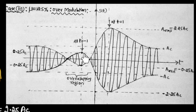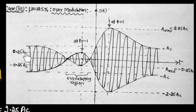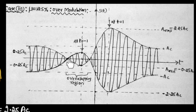We can write the lower envelope as well. At maximum, the lower envelope is −2.25Ac, and at minimum, it is 0.25Ac. As you can see, this section is known as the overlapping region, because the amplitude has crossed from positive into negative value. This type of modulation is known as over-modulation.